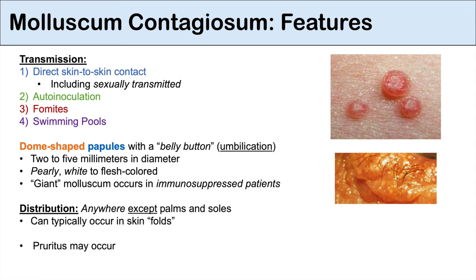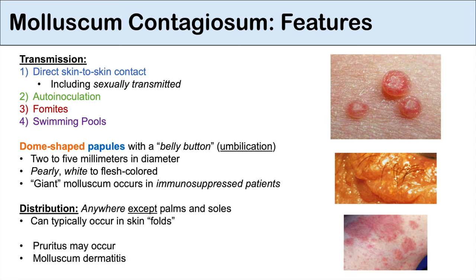With molluscum contagiosum, it is often asymptomatic, but pruritus can occur. These papules can become itchy, which contributes to auto-inoculation. In some cases, we can get what is called molluscum dermatitis, where the papules become inflamed and erythematous. The key takeaway is that molluscum contagiosum presents as dome-shaped papules with a belly button or umbilication — a central indenting.